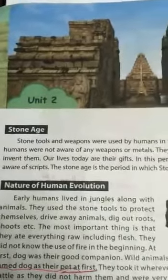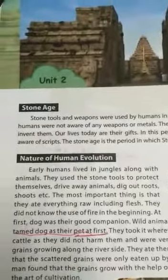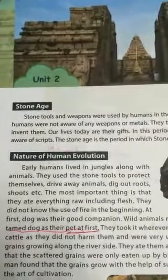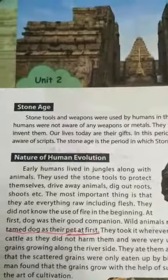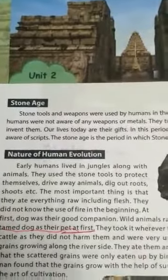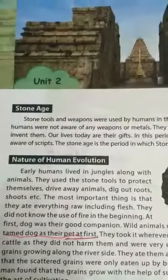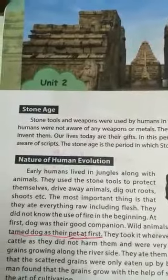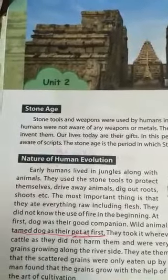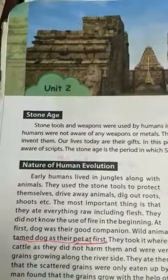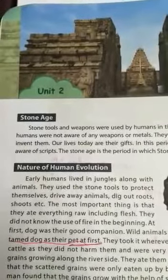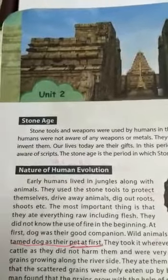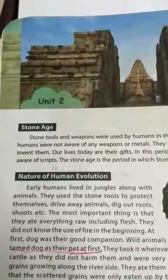Nature of Human Evolution: Early humans lived in jungles along with animals. They used stone tools to protect themselves, drive away animals, dig out roads, chutes, etc.